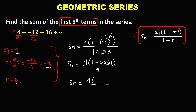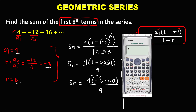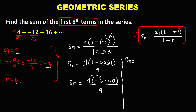So the sum equals 4 times 1 minus 6,561, which equals negative 6,560, then over 4. Multiplying 4 times negative 6,560 equals negative 26,240, so we have negative 26,240 over positive 4.